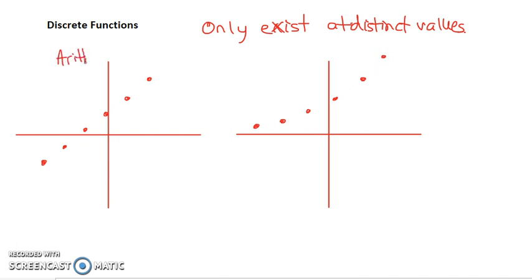In fact, these are the types of discrete functions we're going to look at in this unit. We're going to look at arithmetic functions, and we're going to look at geometric functions. Those only exist as discrete functions at specific points, and we're going to see why that's the case.